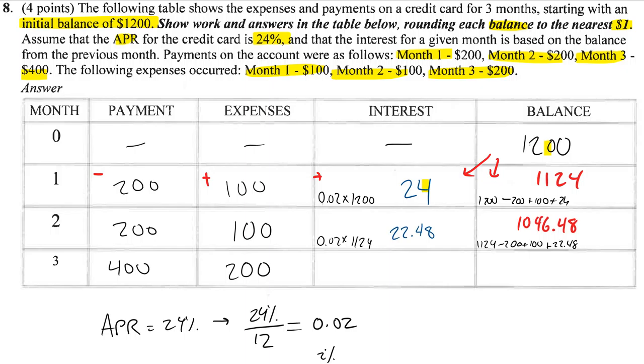And last but not least, we've got 2% of 1,046.48. When I calculate this, I get 20.93. Which means down here at the bottom, it's 1,046.48 minus $400 that we pay off, plus $200 in expenses, plus $20.93 in interest. Overall, the calculator says 867.41. And there we go, those are the answers.